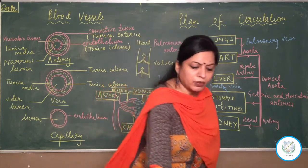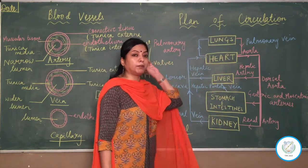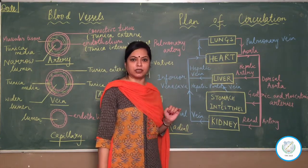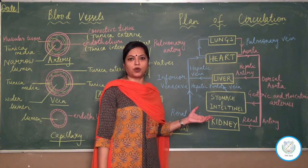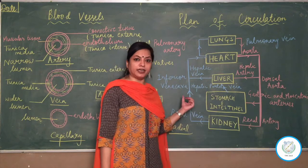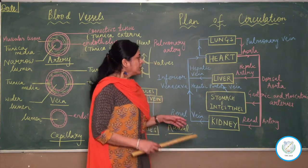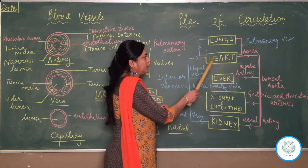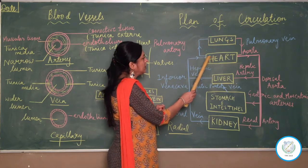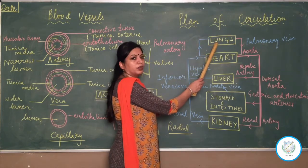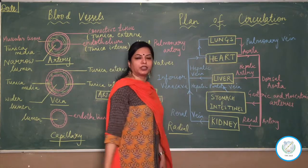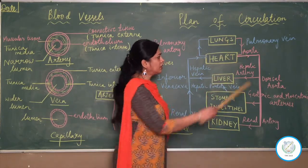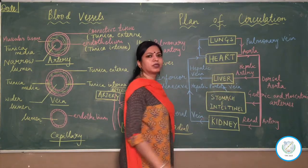Now we talk about the major blood vessels which supply blood to different organs. The complete plan of circulation is not in your syllabus, so only the highlighted organs and their blood vessels are covered. We are already well acquainted with pulmonary circulation between heart and lungs. The pulmonary artery carries deoxygenated blood to the lungs to get oxygenated, and the pulmonary vein brings back the oxygenated blood from the lungs into the heart.